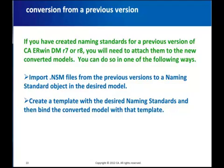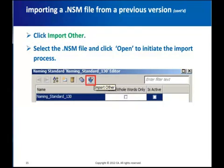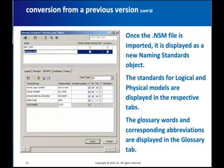Another way is to create a template in R9, set up the naming standards in that template, and then bind the template to a new or converted model. To import an NSM file from a previous version, right-click on naming standards in Model Explorer, create a new naming standards object or select an existing one, and under properties open the naming standards options editor to initiate the import. In the naming standards editor, click on the Import icon to initiate the import from an NSM file. Once the NSM file is imported, it will show up as a naming standards object with the options as set in the NSM file. You can import more than one, but only one at a time. You can activate any one of the available naming standards objects by checking the Is Active box.